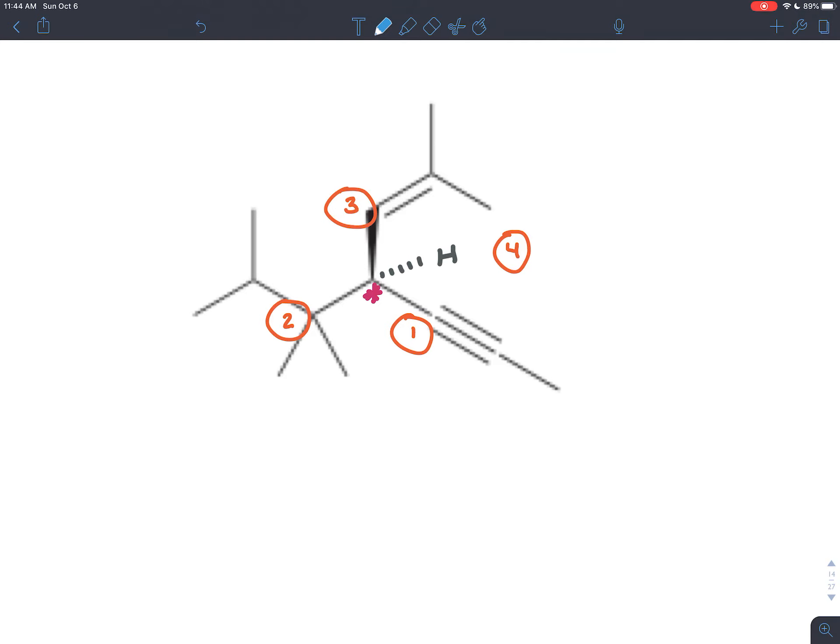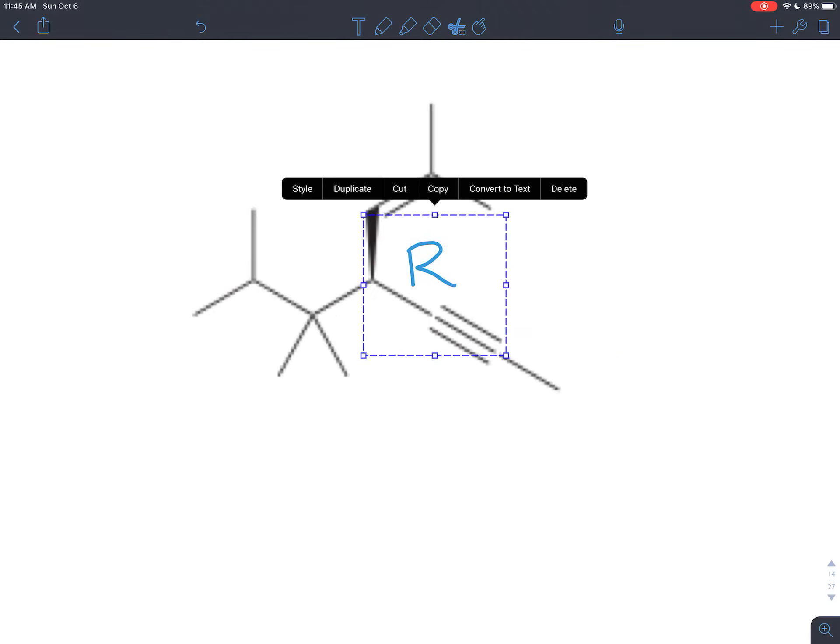All right, so that's our first step assigning priorities based on atomic number. The second step is to make sure that four is going away and four here is going away, which is very nice for us. That means all we have to do is go from one to two to three. And because we're going clockwise, this is going to be the right-handed version of this molecule, the R. So that atom with the red star, that carbon, is the right-handed version of itself. It has an R.